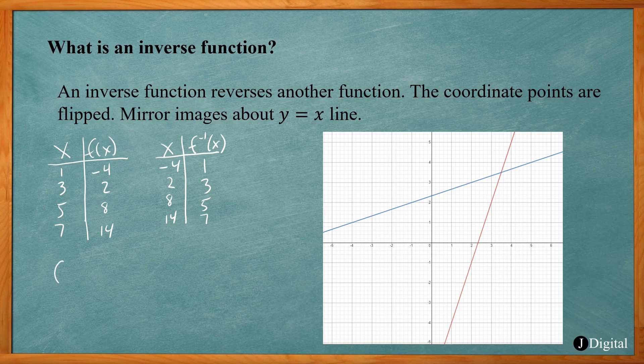So if I plug 1 into f of x, I get negative 4. And if I plug negative 4 into the inverse function, I get back 1. We can see that it reverses what the f of x function did — I plugged in 1, got negative 4, and plugging that result into the inverse function gives back what I started with.